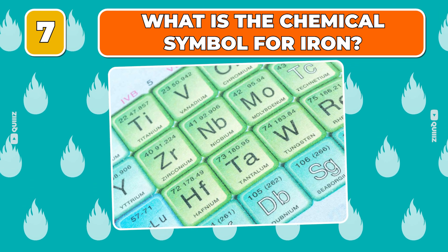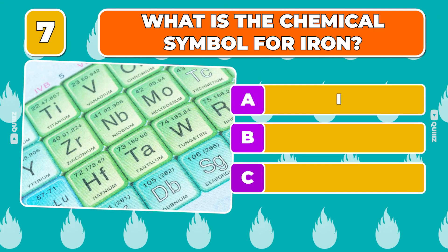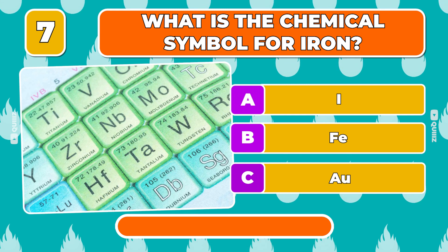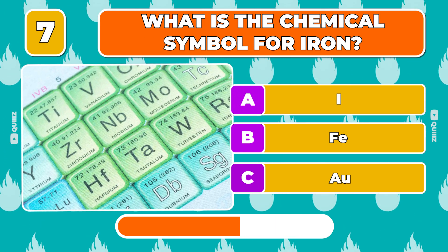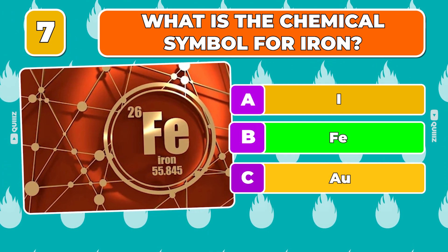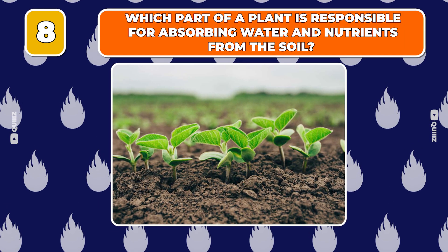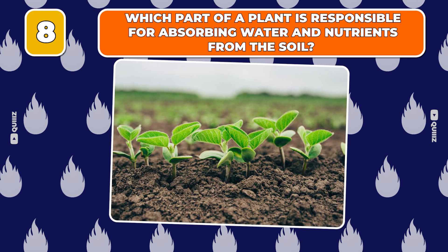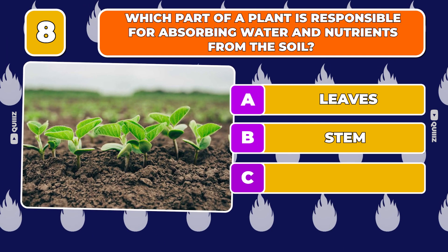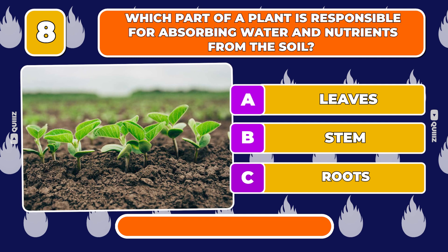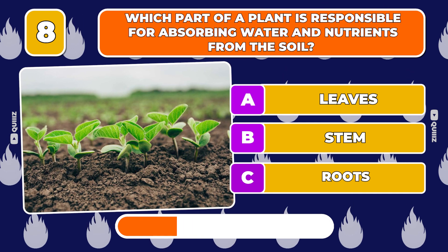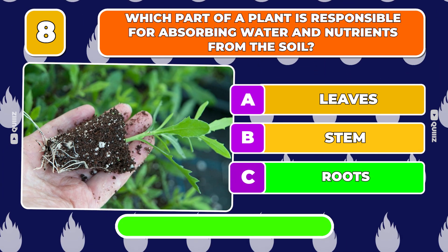Question 7. What is the chemical symbol for iron? Hi, F, E, At you. The correct answer is Fe. Question 8. Which part of a plant is responsible for absorbing water and nutrients from the soil? Leaves? Stem? Roots? You are right — roots.